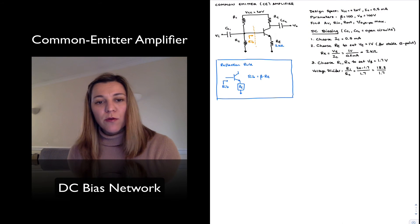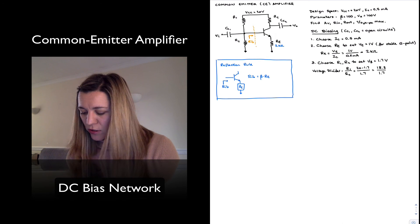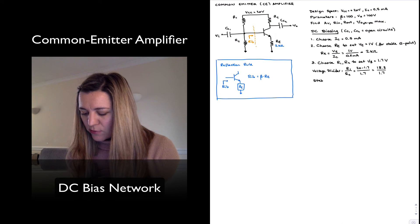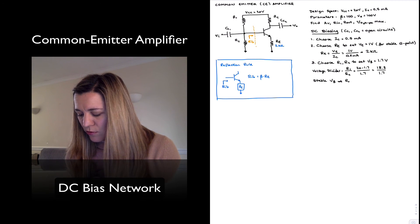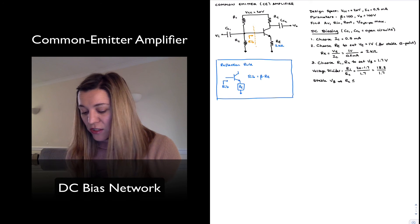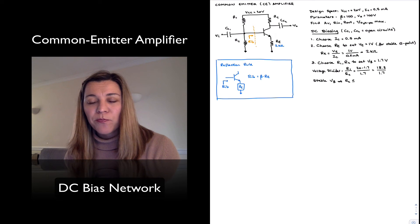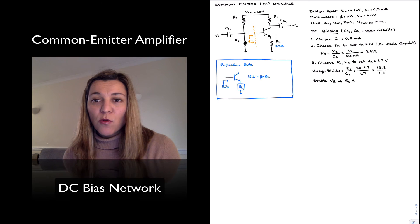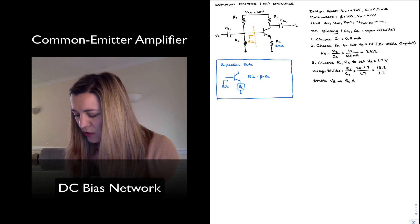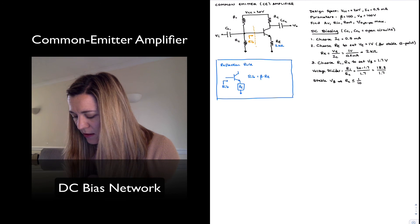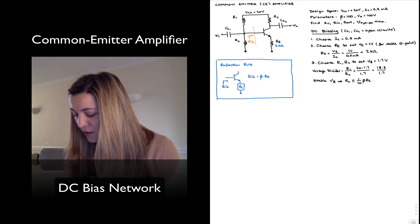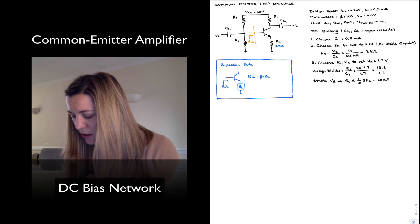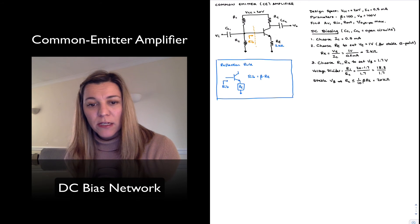And so one consideration for our voltage divider network is that in order to have a stable value of base voltage, I want for R2 to be much smaller than beta times RE. And we mentioned how one order of magnitude typically meets that much smaller requirement. So less than or equal to one-tenth beta times RE. And one-tenth of beta times RE is equal to 20 kilo ohms. So I can choose my R2 to be less than or equal to 20 kilo ohms.